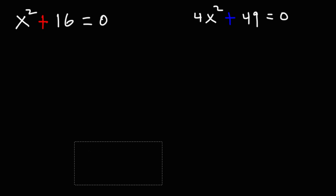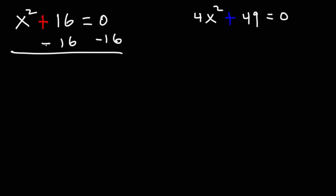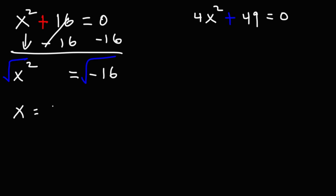Let's start with the first equation on the left. In order to solve it, we need to get x by itself. So, let's begin by subtracting both sides by 16. We're going to get x squared is equal to negative 16. At this point, we could take the square root of both sides. The square root of x squared is just x, but we're going to get plus or minus the square root of negative 16.